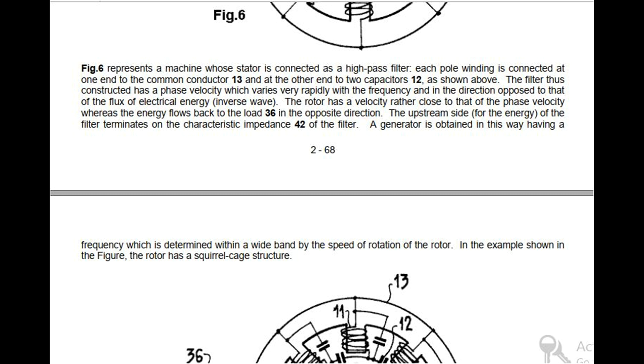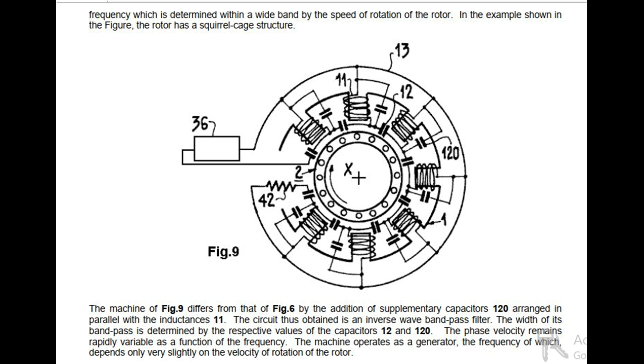The machine of Fig 9 differs from that of Fig 6 by the addition of supplementary capacitors 120 arranged in parallel with the inductances 11. The circuit thus obtained is an inverse wave band pass filter. The width of its band pass is determined by the respective values of the capacitors 12 and 120. The phase velocity remains rapidly variable as a function of the frequency. The machine operates as a generator, the frequency of which depends only very slightly on the velocity of rotation of the rotor.